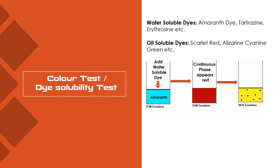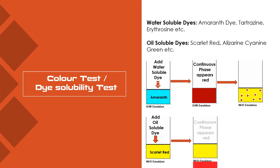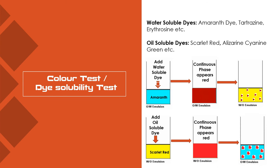When you observe red spots inside the emulsion, you can say it is a water in oil type, because here the continuous phase is oil and water is the dispersed phase — the water droplets take up the amaranth dye and appear as red colored spots. In the next situation, take a water in oil emulsion and add an oil soluble dye like scarlet red. The continuous phase appears red since it is oil. When you observe red spots, you can say it is oil in water type, as oil is the dispersed phase taking up the oil soluble dye.